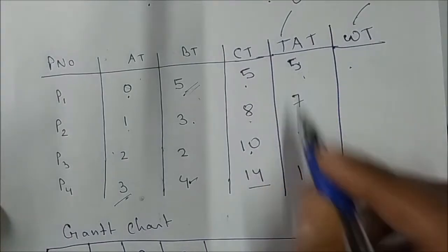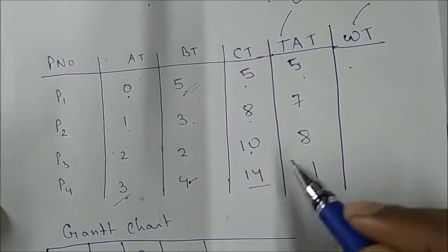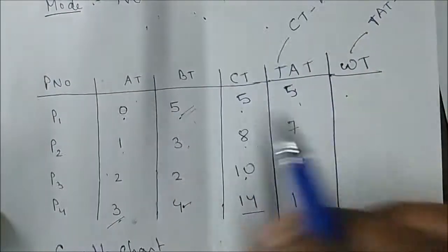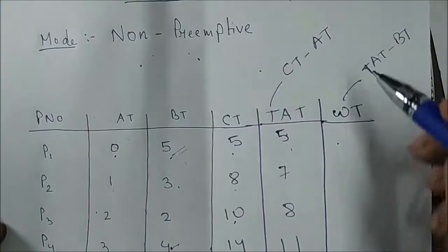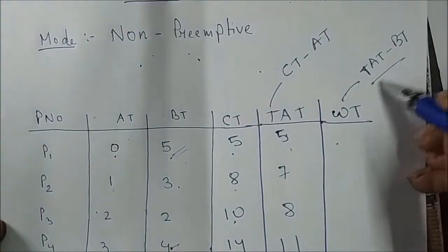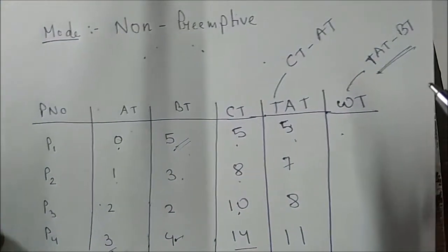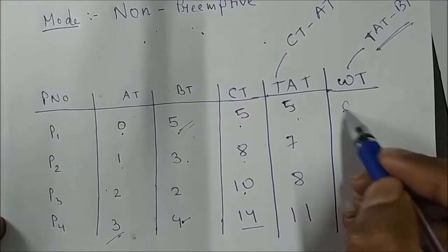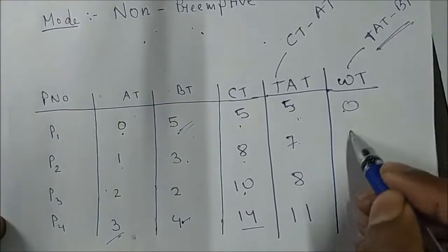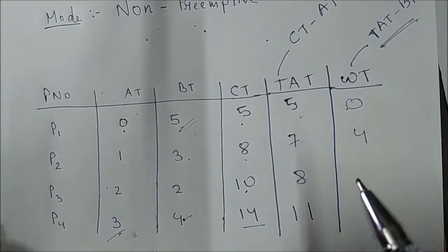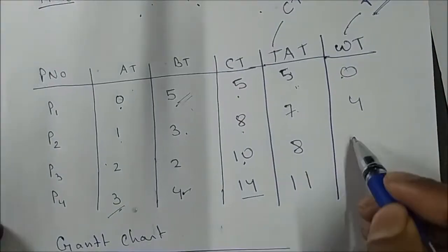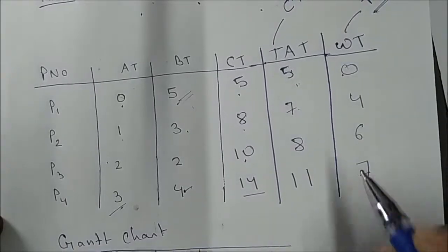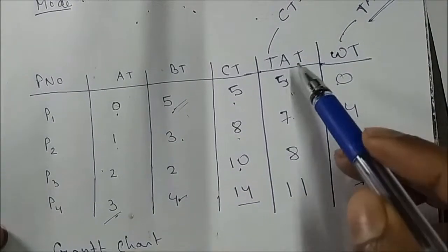Now we find waiting time using the formula: Waiting Time = Turnaround Time − Burst Time. So: P1 = 5 − 5 = 0, P2 = 7 − 3 = 4, P3 = 8 − 2 = 6, P4 = 11 − 4 = 7.